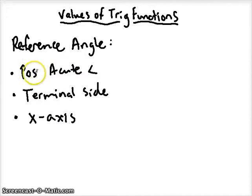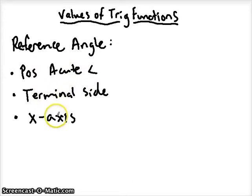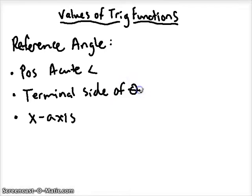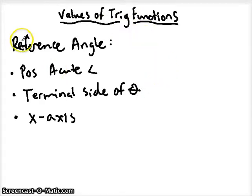It has to be a positive angle, it has to be an acute angle, and it's always going to be formed between the terminal side and the x-axis. The terminal side is going to be the terminal side of the angle that you are asked to find the value of. Keep those three things in mind and we'll do some examples of values of trig functions.